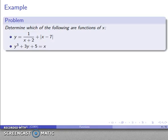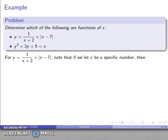Let's look at an example: determine which of the following are functions of x. What that means is if I supply a specific value of x, I want to make sure that I have at most one value of y. So let's take a look at our relation, keeping in mind that if it's a function of x, a specific value of x should give me at most one value of y.